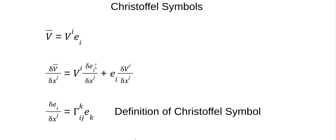So this becomes the definition of the Christoffel symbol. Now, you can imagine in Cartesian coordinates where basis vectors are orthonormal unit vectors — they're the same everywhere, so this term goes to zero. It just drops out. And that's why it's so easy to understand these things in Cartesian coordinates. But it's not true in curvilinear coordinates, which is what you're interested in in relativity.